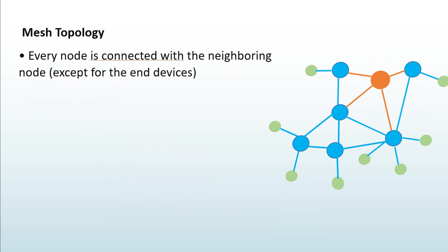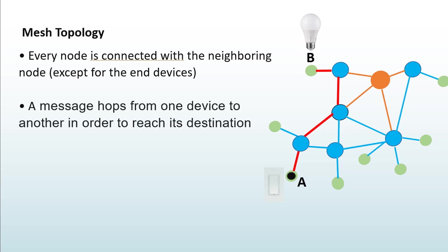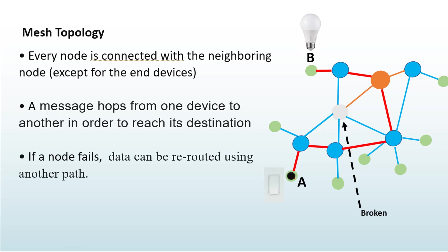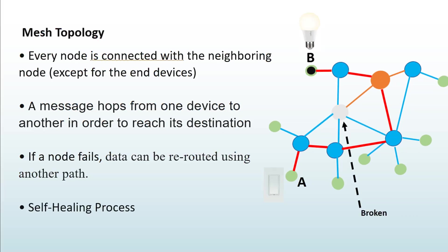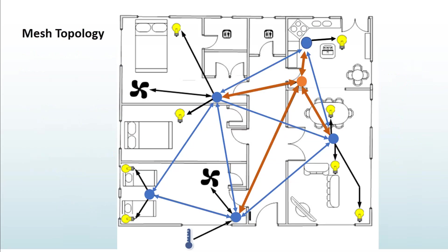In mesh networks, every node is connected with neighboring nodes, except end devices which cannot connect directly with each other. If device A wants to transmit to device B, the message hops from one device to another until it reaches its destination. The main advantage of mesh networks is that if one node fails, it does not incapacitate the entire system since data can be rerouted using a different path — this is called the self-healing process.